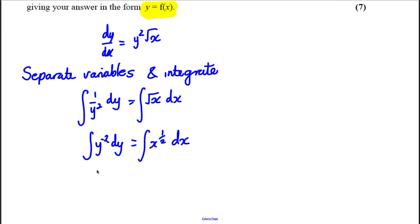So add 1 to the power and divide. This would be -1/y. This side, add 1 to the power, it'd be 3/2 and divide, so it would be (2/3)x^(3/2). And at this point, don't forget to add your c, so add the constant of integration c. A constant would have been added to both sides, but you can just think of it as one constant added to the right.